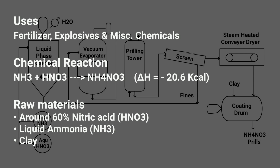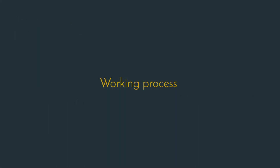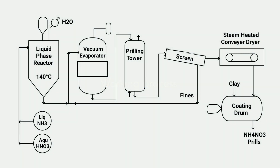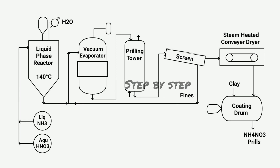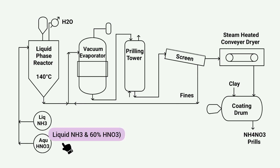To produce ammonium nitrate, the main ingredients required are nitric acid, liquid ammonia, and clay. Liquid ammonia and approximately 60 percent aqueous nitric acid are sent from the storage tank to the liquid phase reactor.